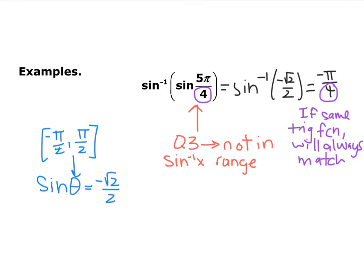Remember, when it's in the fourth quadrant, we always answer with the negative angle. If the two are the same trig function — sine inverse and sine — your denominators of your angles are always going to match. In this case it went from 5π/4 to negative π/4.